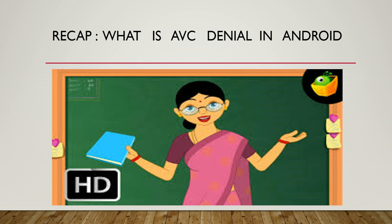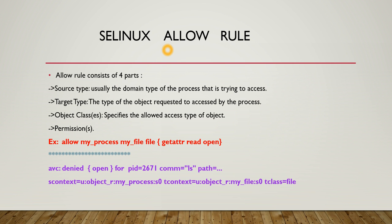Based on this cache, the security server will make a decision to either allow or deny access — that is what AVC is. If permission is allowed in that cache, AVC denial error will not occur. If some app doesn't have permission to access a particular file based on that cache, AVC denial errors will occur. So remember: AVC denial means when a particular app, service, or process doesn't have permission to access a particular resource, AVC denial errors will occur. In SELinux, all access must be explicitly authorized — SELinux does not allow any access by default.